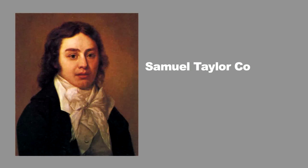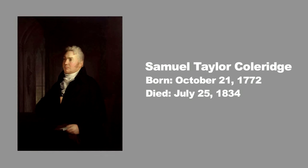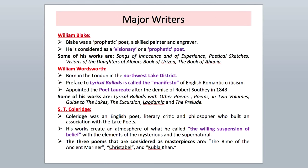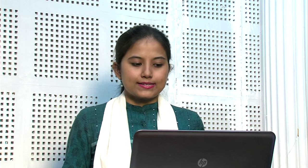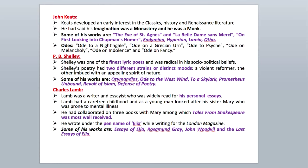S.T. Coleridge was an English poet, literary critic, and philosopher who built an association with the Lake Poets. His works create an atmosphere of what he called the willing suspension of disbelief, with elements of the mysterious and the supernatural. The three poems considered as masterpieces are The Rime of the Ancient Mariner, Christabel, and Kubla Khan. John Keats developed an early interest in the classics, history, and Renaissance literature. He said his imagination was a monastery and he a monk. Some of his works are The Eve of St. Agnes, La Belle Dame Sans Merci, On First Looking into Chapman's Homer, Endymion, Hyperion, and Lamia. He also wrote several odes and is known for his six odes: Ode to a Nightingale, Ode on a Grecian Urn, Ode to Psyche, Ode on Melancholy, Ode on Indolence, and Ode on Fancy.